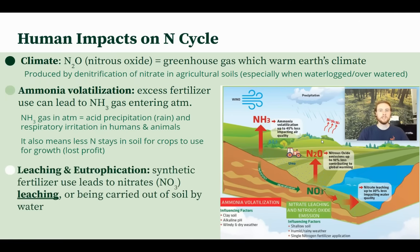Finally, there is the issue of leaching and eutrophication. When we use synthetic fertilizers, we often over-apply nitrates to the soil — more than it can hold. This leads to leaching, where rainwater or irrigation water carries the nitrates right out of the soil, flushing them away. That agricultural runoff can enter local bodies of water like streams or lakes. All of this excess nitrogen fuels aggressive algae growth to the point that algae covers the surface of the water, blocking sunlight so that aquatic plants below the surface don't get what they need, which can kill those plants.